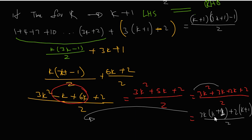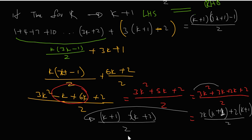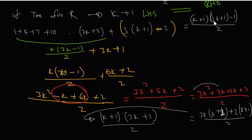Now there is a common factor of k plus one. Taking out k plus one from both terms, we are left with three k plus two, all over two. The question is: is this the same as the right hand side formula we set up?